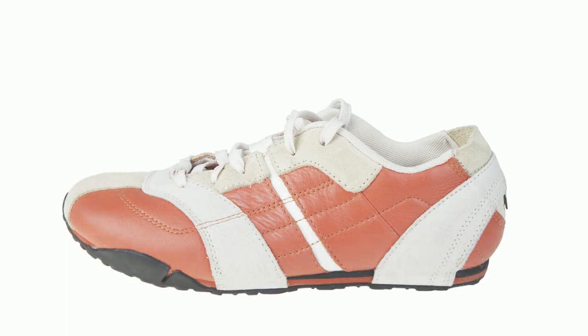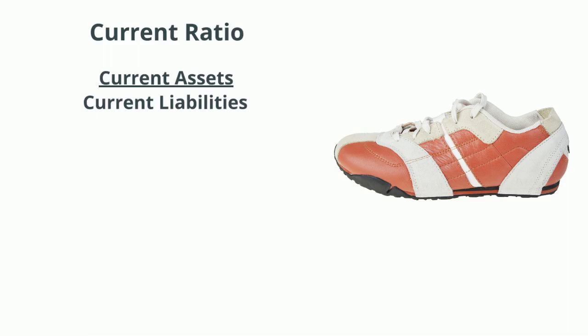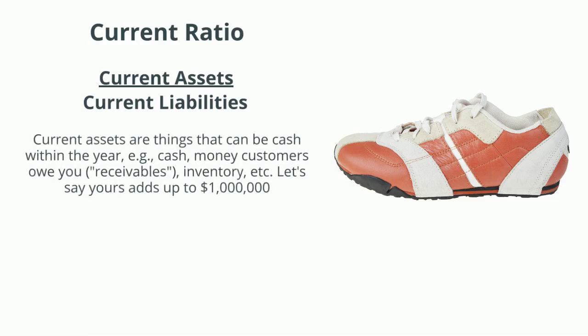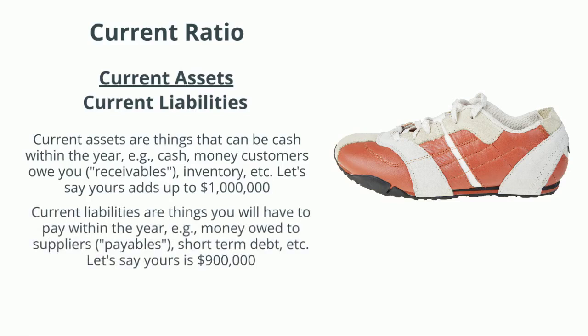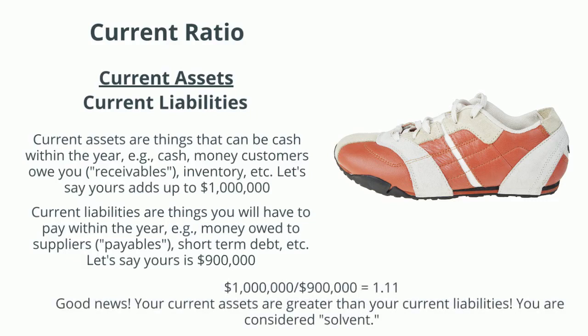Suppose you have a sneaker manufacturing business. The current ratio is current assets over current liabilities. Current assets are things that can be turned into cash within the year, like cash, money customers owe you, or inventory — let's say yours adds up to a million. Current liabilities are things you have to pay within the year, like money owed to suppliers or short-term debt — let's say $900,000. $1 million over $900,000 is 1.11. Your current assets exceed your current liabilities, so you are considered solvent.